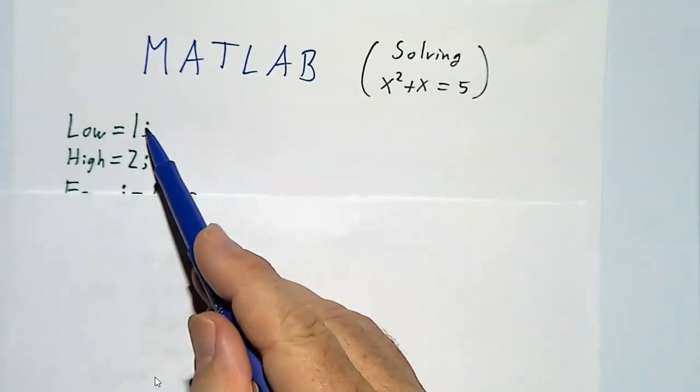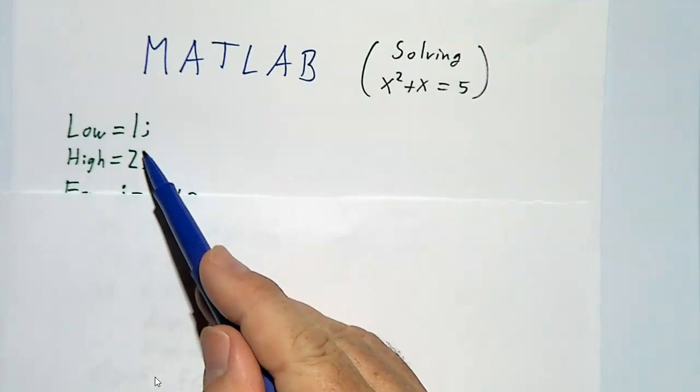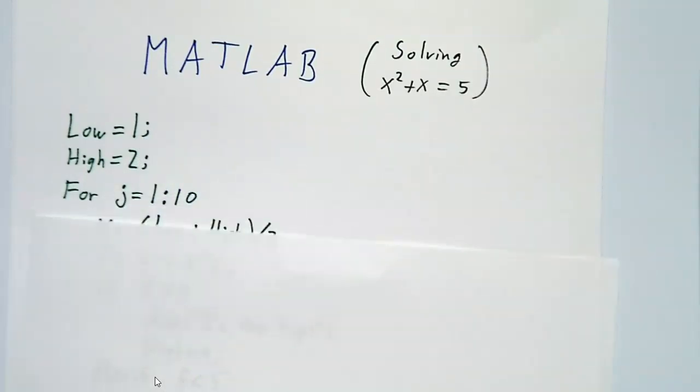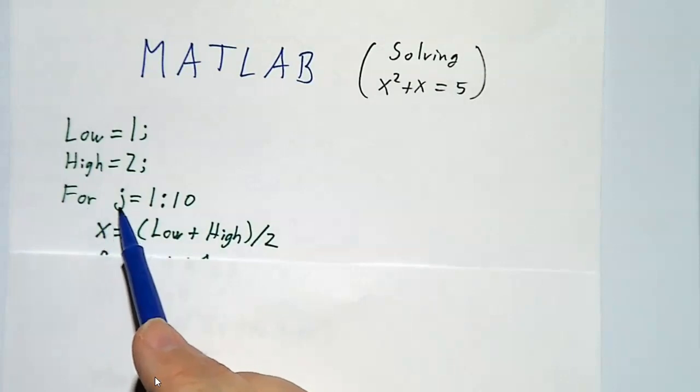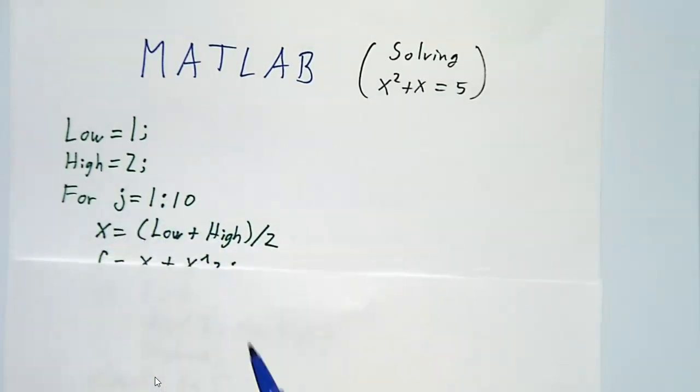We start off with our guesses of 1 and 2. That's our lower and upper bounds. And then we're going to do this 10 times. And we do a loop. Our index goes from 1 to 10.